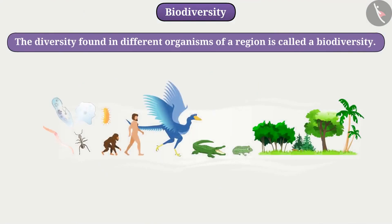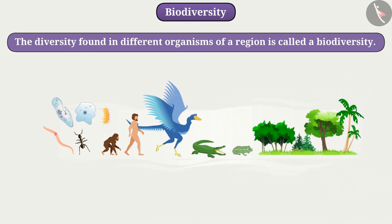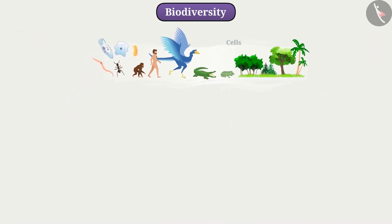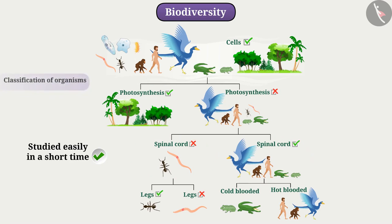There is so much biodiversity on earth that we cannot study each organism independently one after another — it will take too much time. But if we form groups based on different organisms, then these groups can be studied easily and in a short time. Forming groups based on similarities and differences of organisms is called classification of organisms.